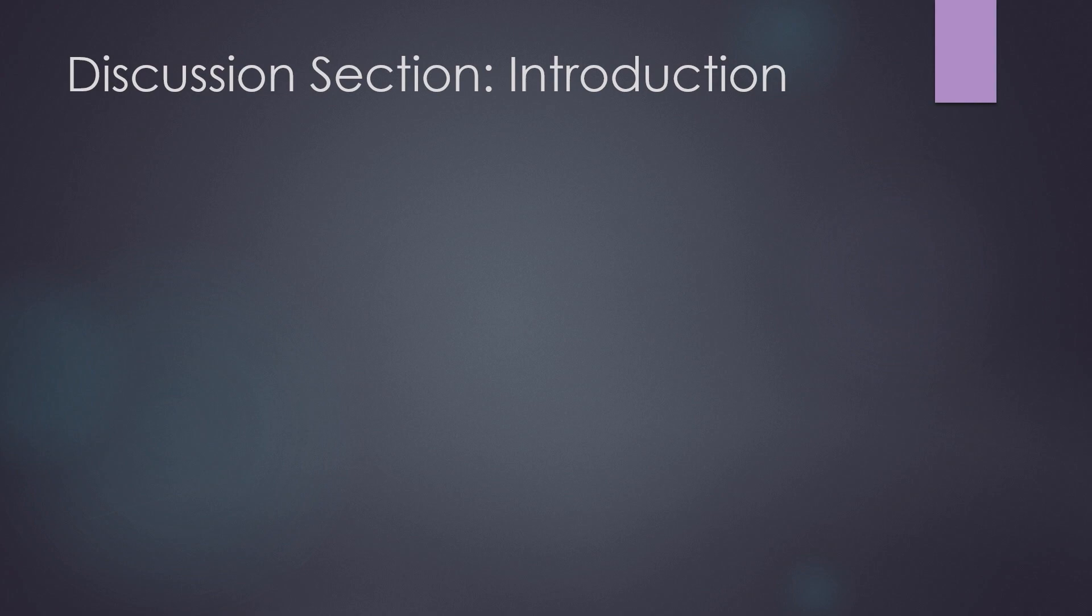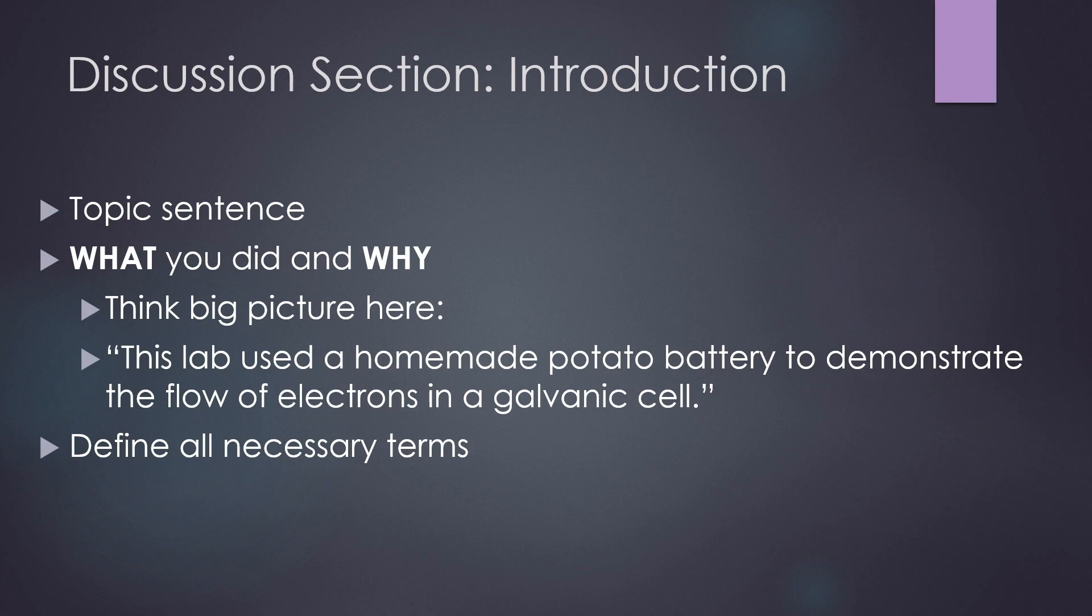Like every paragraph in your discussion section, your introduction should open with a topic sentence that highlights the major point the paragraph will make. For example, your introduction paragraph to an electrochemistry lab report might begin something like, this lab used a homemade potato battery to demonstrate the flow of electrons in a galvanic cell. The major goal of this paragraph is to say what you did in the experiment and why you did the things that you did. You should also define all of the special or necessary terms that you will use throughout your report, such as galvanic cell or cathode.